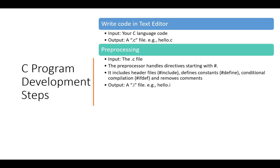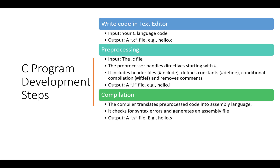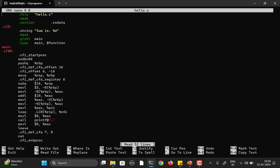One important thing to remember: the .h files contain the prototypes of the functions you have used in your program. For example, stdio.h includes the prototype of the printf function. Now we have the .i file, which is fed into the compiler for compilation. The job of the compiler is mainly to check for syntax errors and convert the high-level language code into assembly-level language code. The output is a .s file. Using gcc -s hello.i generates a hello.s file — this is the assembly language code for that program.